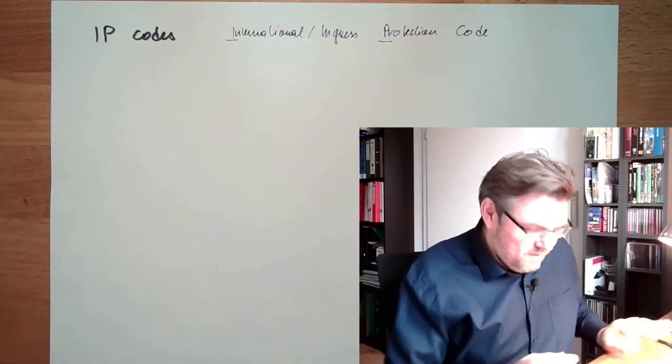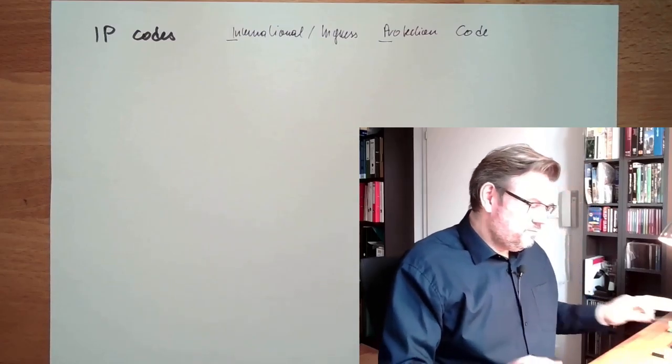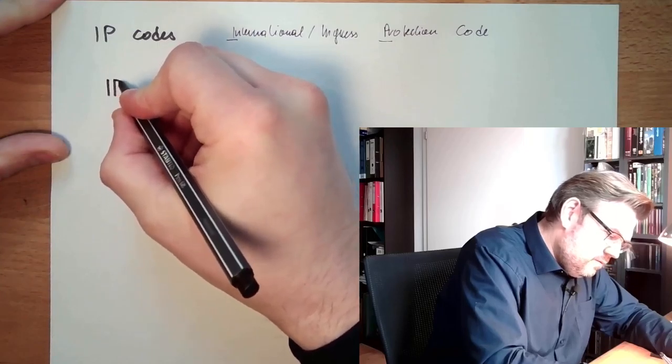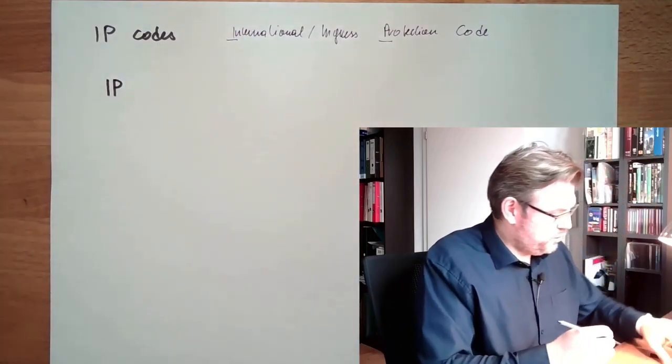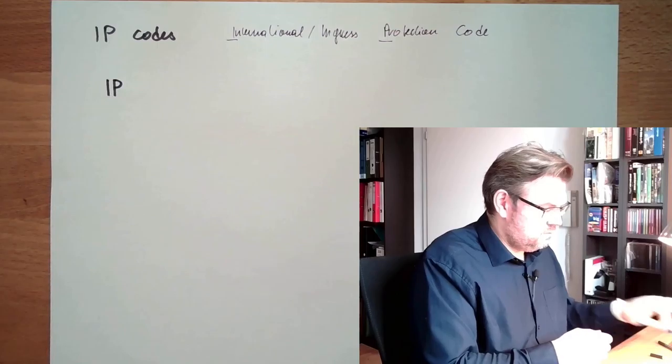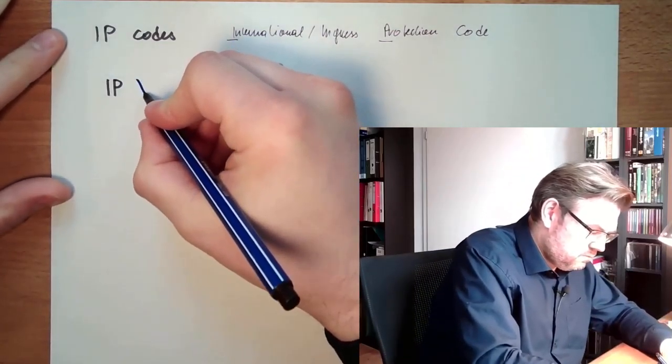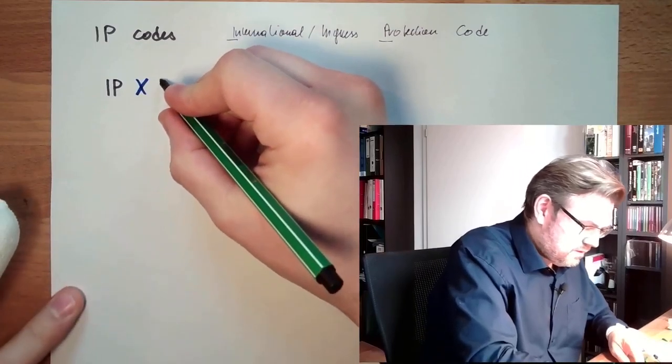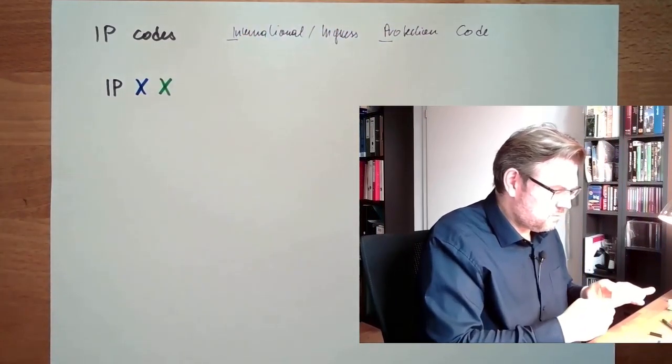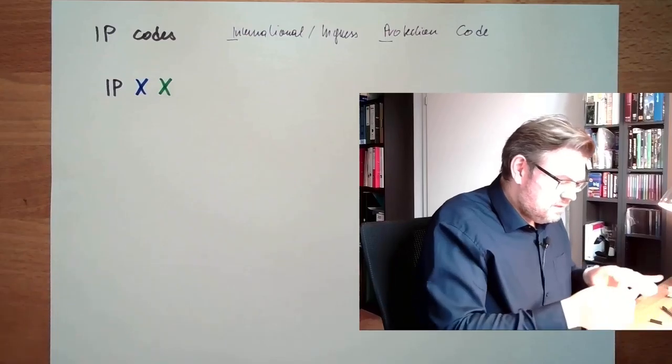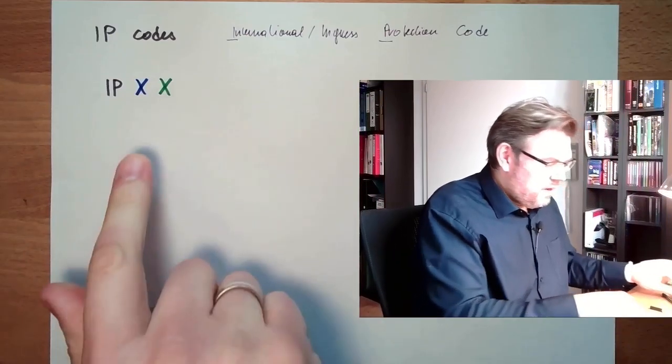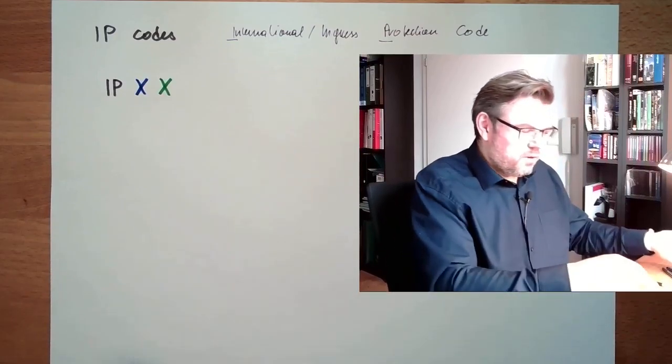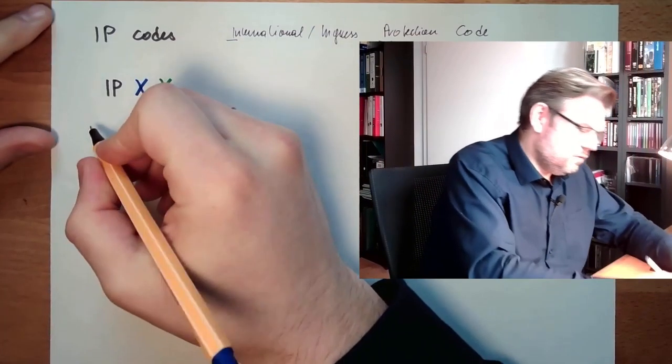What is an IP code? An IP code consists of the two letters I and P and then two digits. Digit 1, X and digit 2, X. Each of these digits has a meaning. Let's first talk about the first digit.